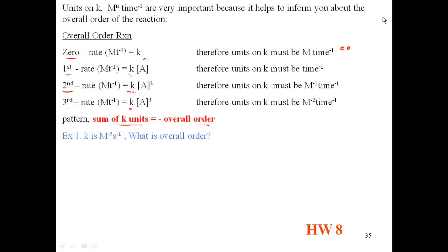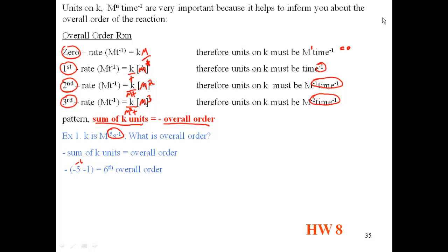Let's look at an example and see how we can use this. There may be a problem and all they give you is the K. You need to figure out what the overall order is to be able to know which equation to use. So, say K is molarity minus 5 seconds minus 1. What is the overall order? We know that minus the sum of your K units is equal to the overall order. So, if I take that, I got minus 5 and minus 1. That's minus 6. And a negative of that gives me a positive. That's a 6 overall order. So, just by looking at the units, minus 5, minus 1, 5 and 6, I know that's a 6 overall order. It's important.